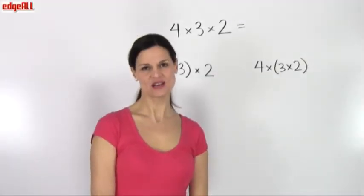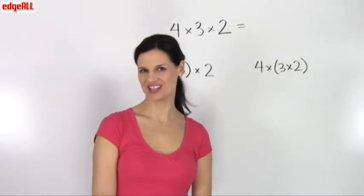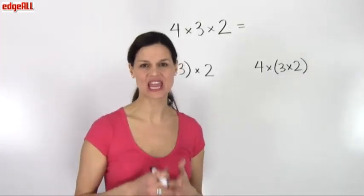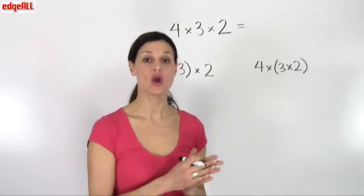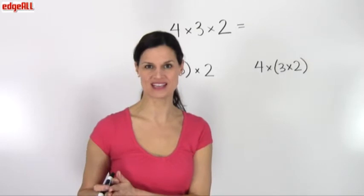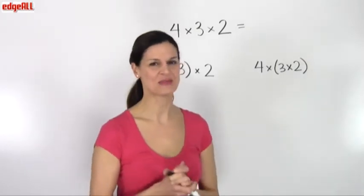The associative property of multiplication tells us that when only multiplication is involved, the order in which the multiplication is performed does not affect the product.